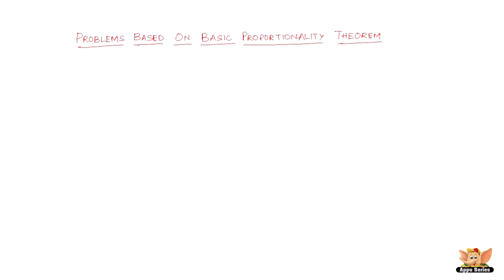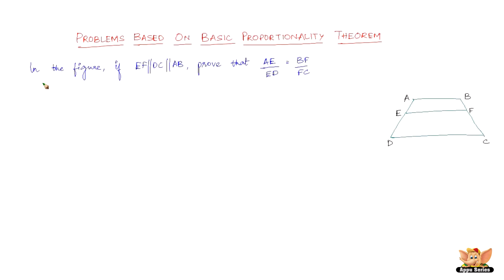In this video, let us solve more problems based on the basic proportionality theorem. The question reads: in the figure, if EF is parallel to DC and DC is parallel to AB, prove that AE over ED equals BF over FC.